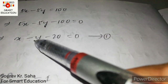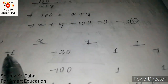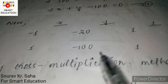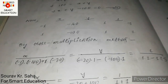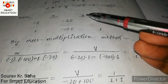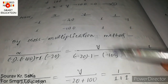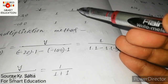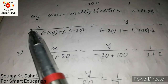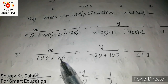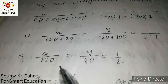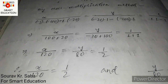Applying cross multiplication. Coefficients: equation one — 1, minus 1, minus 20 — and equation two — 1, 1, minus 100. By cross multiplication: x by (−1 × −100 − 1 × −20) = x by (100 + 20) = x by 120; y by (−20 × 1 − (−100) × 1) = y by (−20 + 100) = y by 80; and 1 by (1 × 1 − 1 × −1) = 1 by 2.